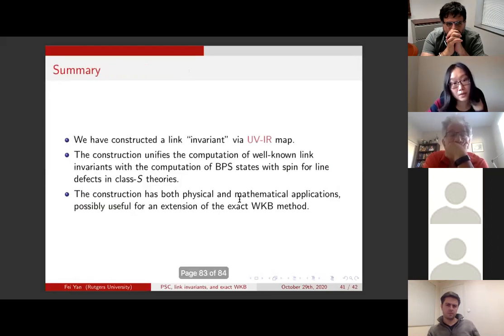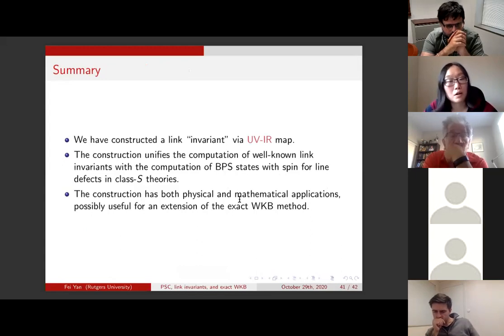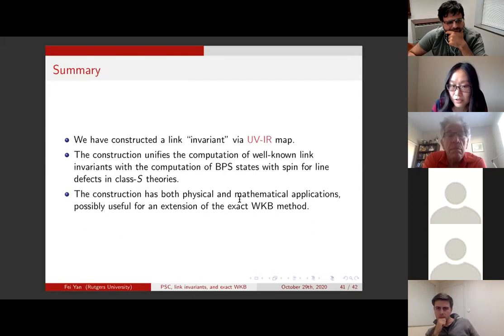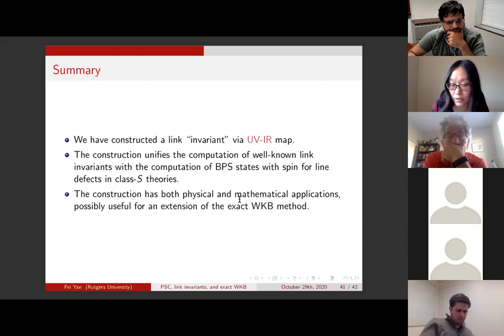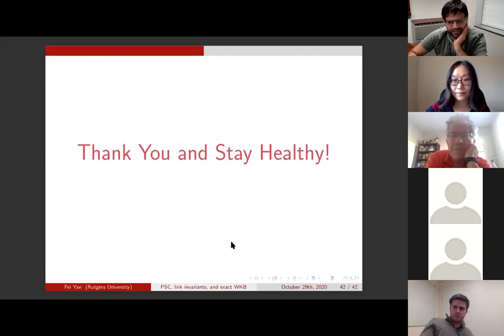Let me summarize. We have constructed a linking invariant, this UV-IR map. This construction unifies the computation of HOMFLY polynomials with the computation of BPS states with spin for line defects in class S theories. This construction could have both physical and mathematical applications, and is also possibly useful for a Q-deformed version of the TBA equation, or for an extension of the traditional exact WKB method in 4D N=2 theories. Thank you, and I hope everyone stays healthy. Thank you very much, Faye, for the very interesting talk.